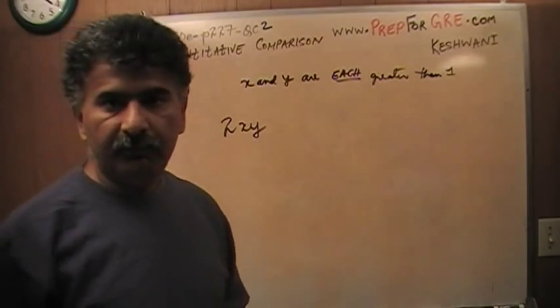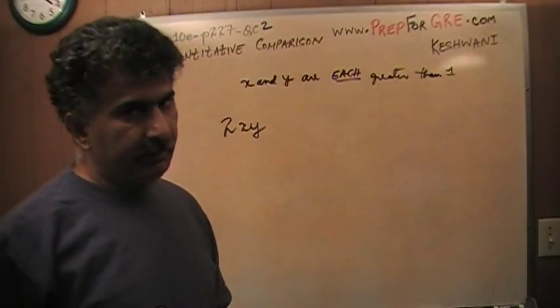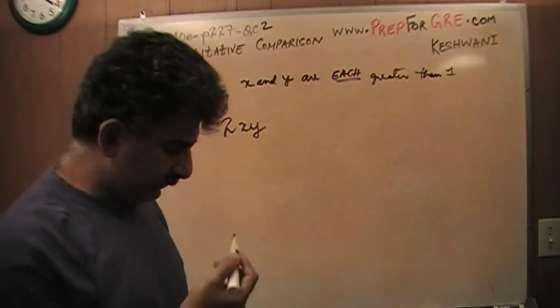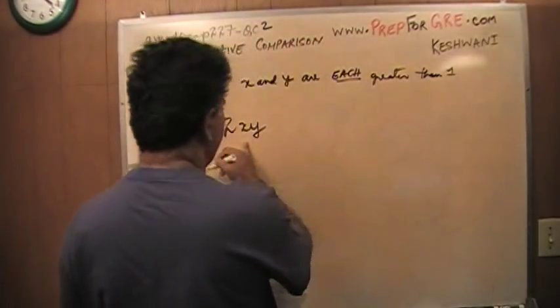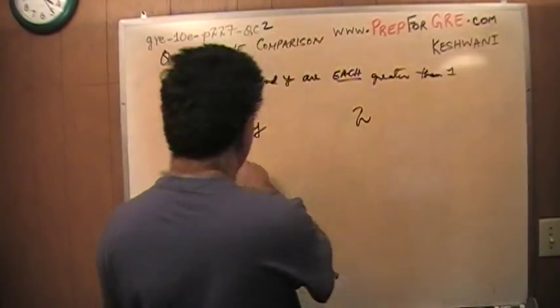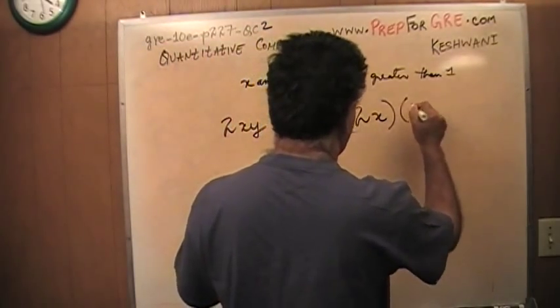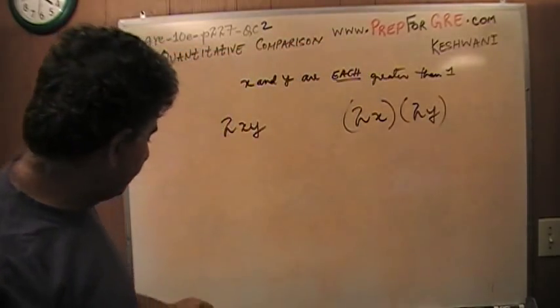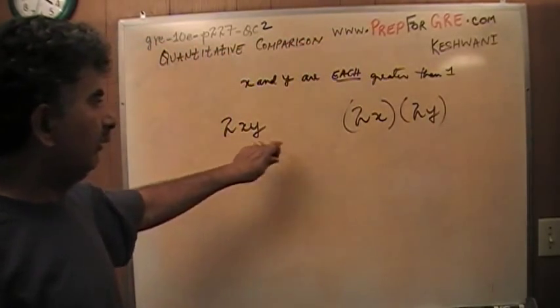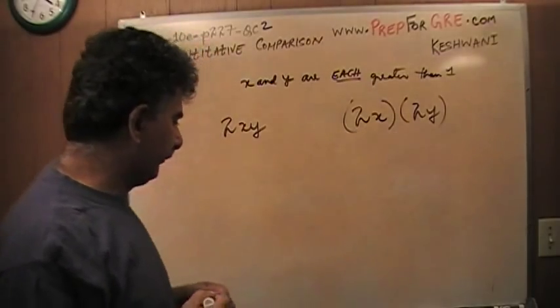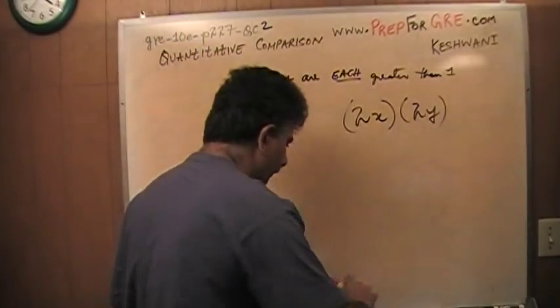Let's take a look at it. They want you to compare 2 times x times y versus 2x times 2y.